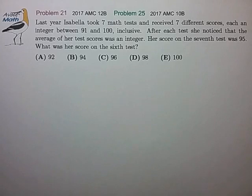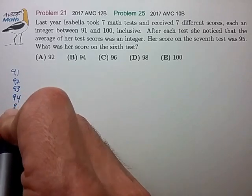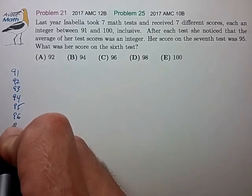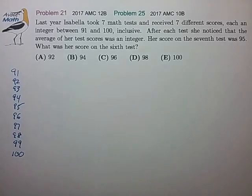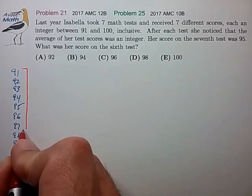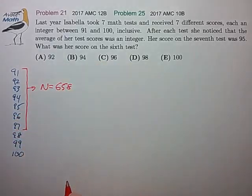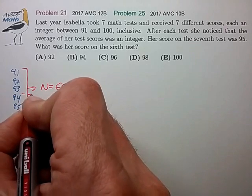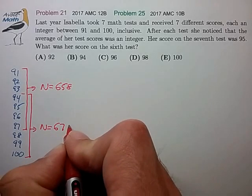So let's take a look at all the available test scores. It's probably helpful to just write them down. And it's helpful to know a lower and an upper bound for the total of all seven test scores. So the seven test scores could come from the lowest seven, and if we sum that up, we get a total of 658.